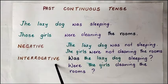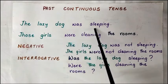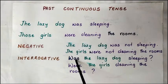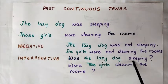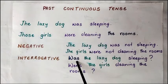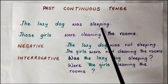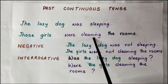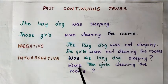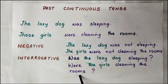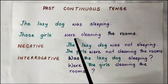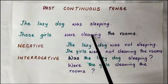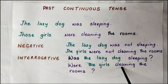Then we have the interrogative. 'The lazy dog was sleeping' — the interrogative is 'was the lazy dog sleeping?' You use the same auxiliary verb and the same principal verb. 'Those girls were cleaning the rooms' — the interrogative is 'were the girls cleaning the rooms?' Here also we use the same auxiliary verb and the same principal verb.